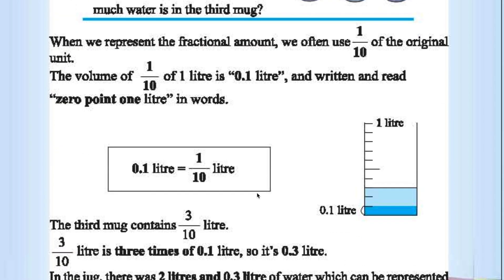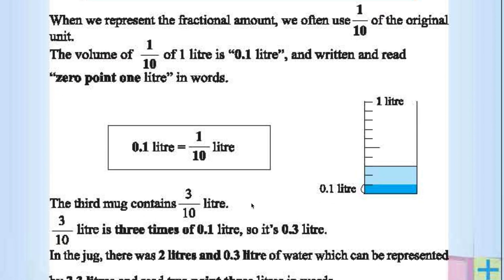This is 0.1 liter. And the jug is filled up to first division. First division means 0.1 liter. If the jug fills up to third division, then it becomes 3 by 10. 3 by 10 is nothing but 0.3.